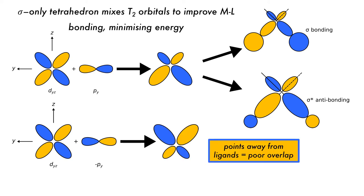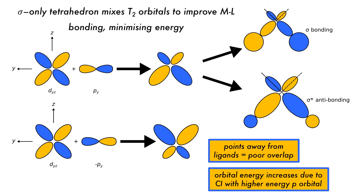Another has the phase of the PY orbital inverted, or minus PY. When these are mixed, the configuration interaction points in the opposite direction away from the ligand set, resulting in poorer overlap. This configuration becomes higher in energy, even though it is partially non-bonding, because the D orbital was mixed with a higher energy P orbital. These types of configuration are also possible between the DXY and PZ orbital and the DXZ and PX orbitals.